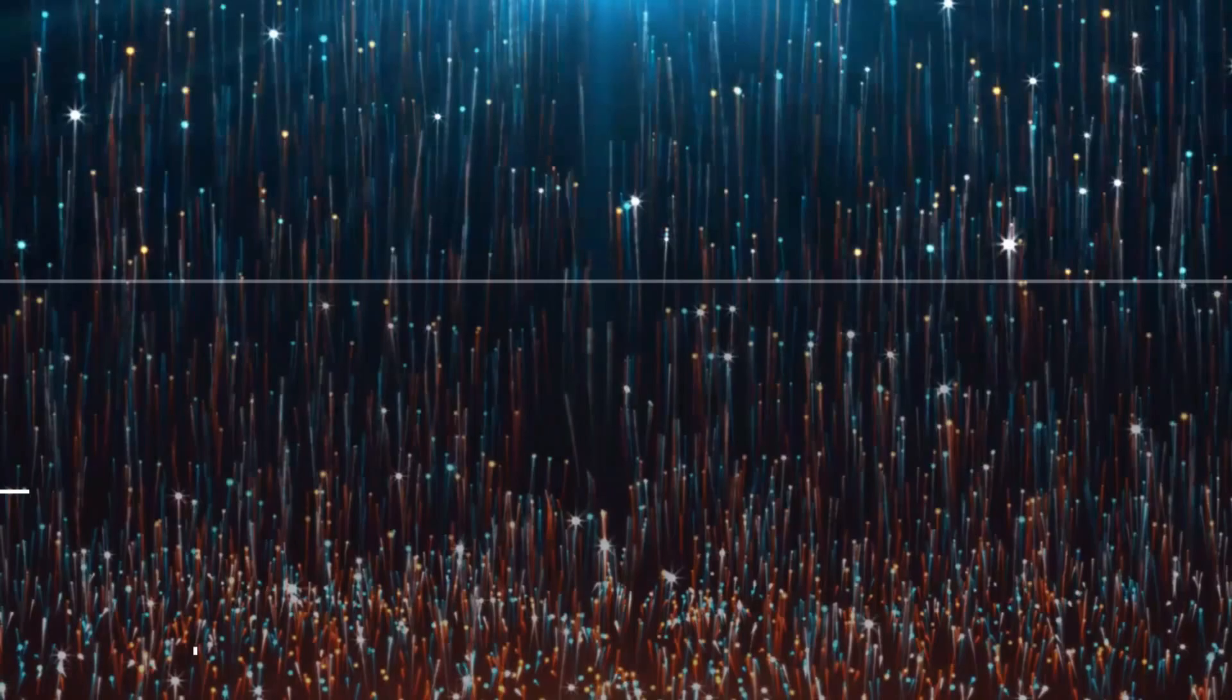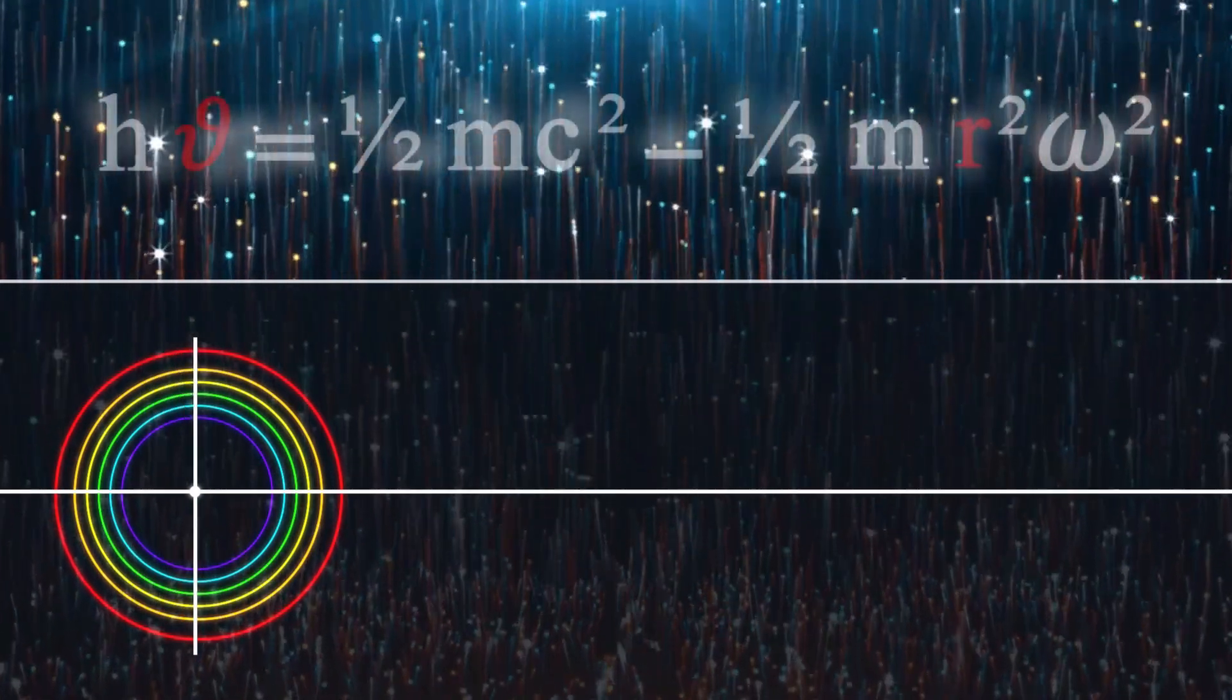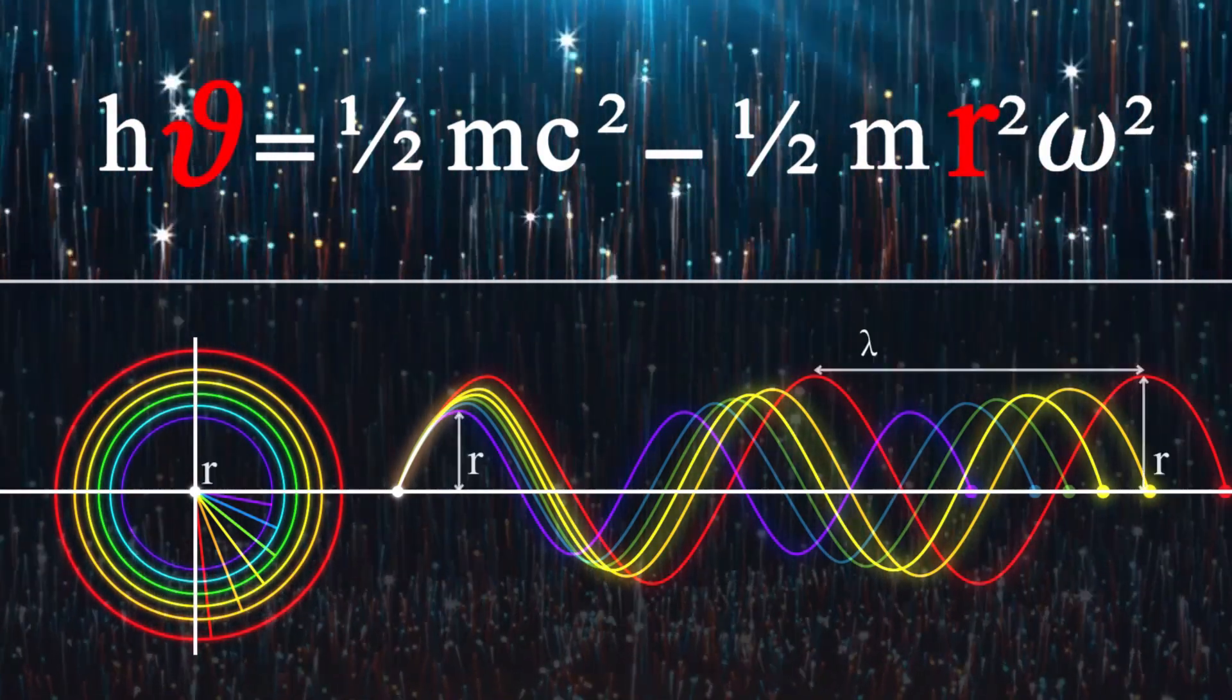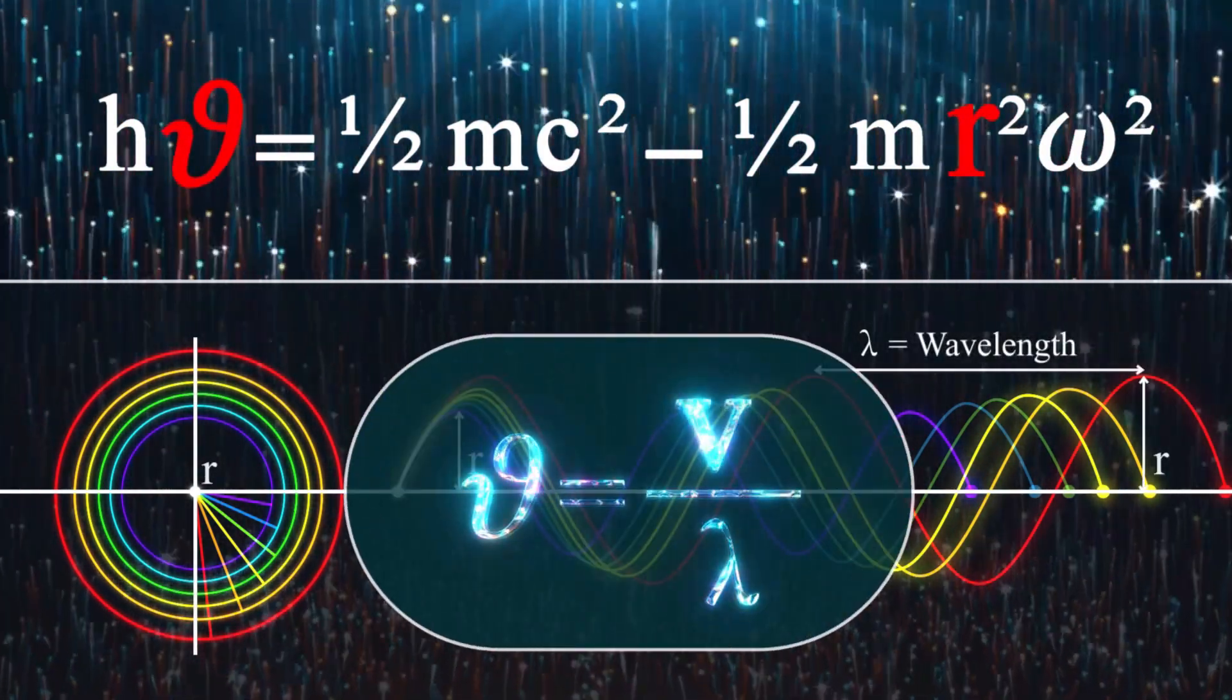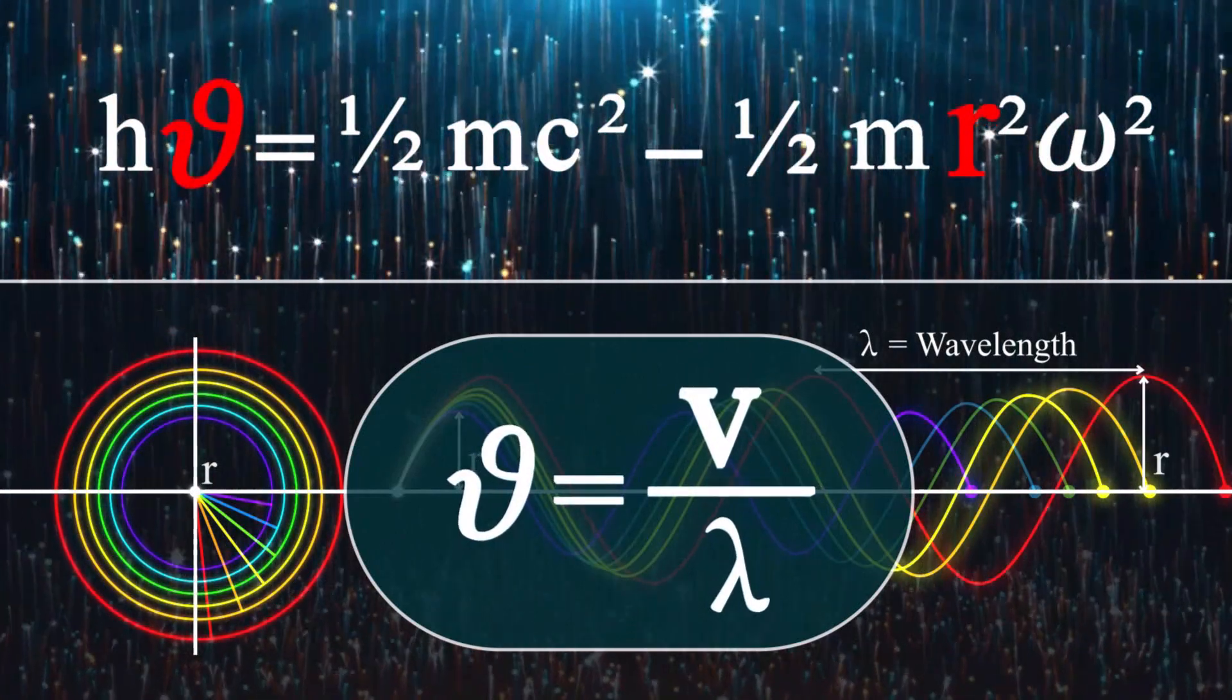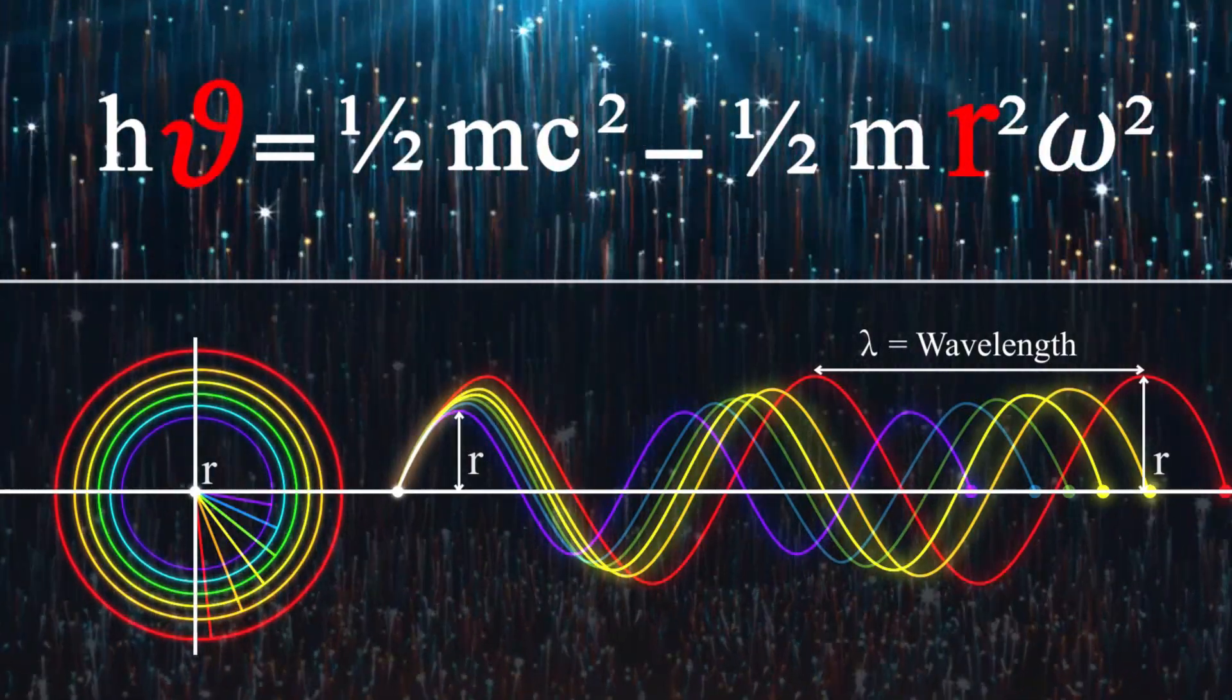The important and interesting point in this new formula for the energy of photon is that the variables of this equation are homogeneous. As you know, for a wave with constant velocity, the frequency is directly related to the inverse value of wavelengths. Therefore, the variations of both variables, the rotational radius and the frequency, are the same kind of dimensional units.